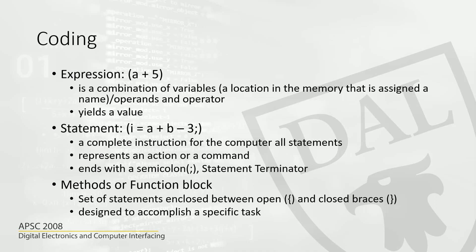A statement always represents an action or a command. For example: I equals A plus B minus 3. A has a value, B has a value — that is an expression. The equal sign here is called an assignment operator. What it does is assign the value of the expression on the right to the variable on the left. So if A is 1 and B is 2, then 1 plus 2 minus 3 equals 0, and 0 is assigned to I. That is a statement — we do an assignment operation, and equals is the assignment operator.